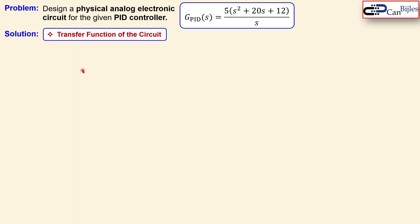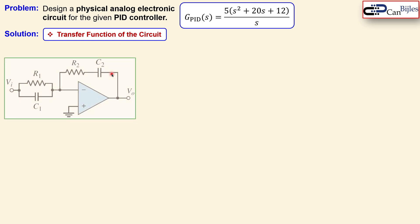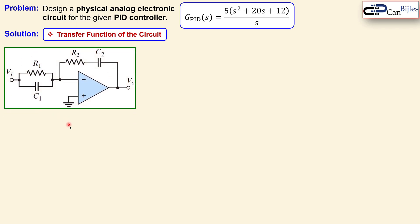We start with the transfer function of the circuit we will use, which is a combination of the PI and PD controller circuits discussed in the previous two examples. There is one capacitor and resistor in parallel, and one resistor and one capacitor in the feedback path in series. This combination will make the desired transfer function possible when you choose the correct values for the resistors and capacitors.